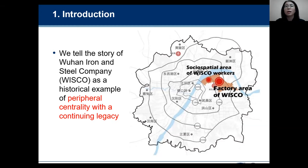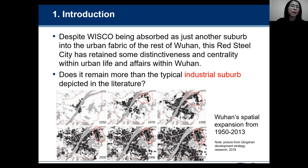To further analyze the spatial expansion from the 1950s, we can see Qingshan was almost empty — just farmland in 1950. By 1970, it starts to build, and Wisco and Qingshan district emerged here. Gradually, after decades of development, Wisco has been absorbed, like many other suburbs, into Wuhan's urban fabric. But we think this Red Steel City has retained some distinctiveness and centrality within urban life and affairs within Wuhan.